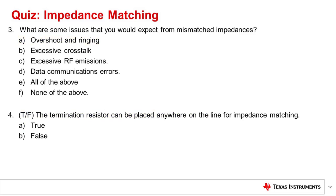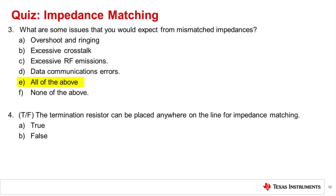Question 3: What are some issues that you would expect from mismatched impedances? The correct answer is E, all of the above. Impedance mismatching can cause overshoot, crosstalk, RF emissions, and data communications errors.